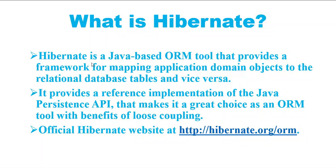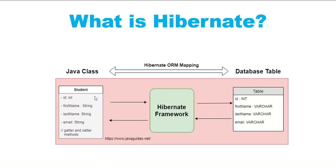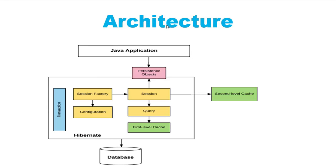Hibernate is a Java-based ORM tool that provides a framework for mapping application domain objects to relational database tables and vice versa. Hibernate provides a reference implementation of JPA, making it a great choice as an ORM tool with the benefits of loose coupling. For example, a Student Java class can be mapped to a Student database table through Hibernate's ORM mapping.